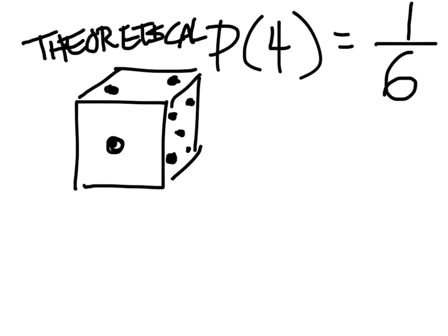Why is it theoretical? Because we haven't actually done anything with the dice other than looked at it. There are six sides and only one had a four. Maybe it's a different kind of dice where it has two sides that are four — in that case, instead of a one there, you'd have a two. Theoretically, that would be the difference.